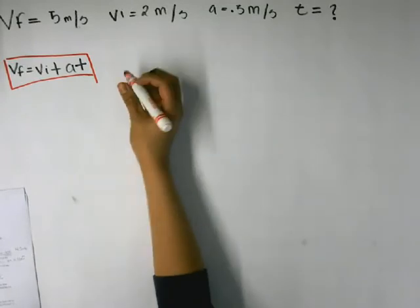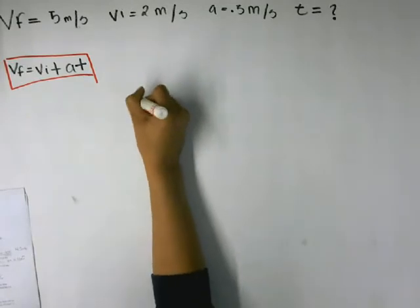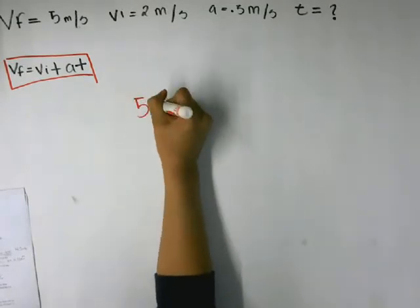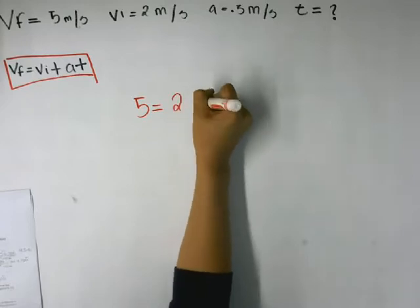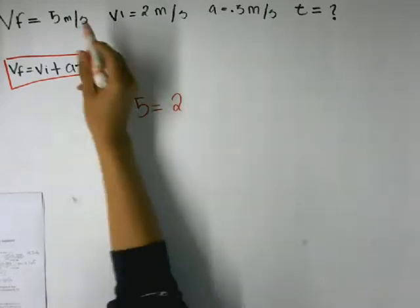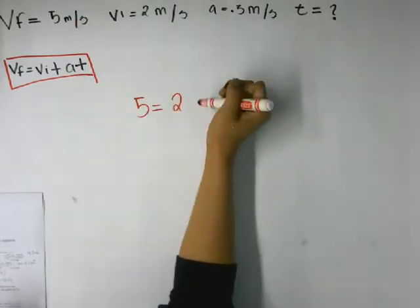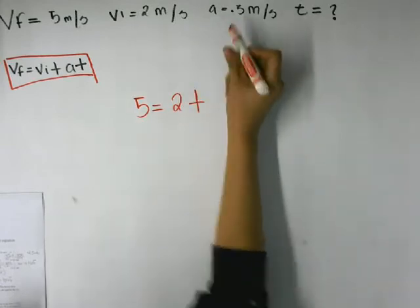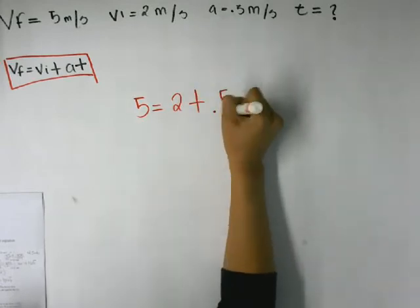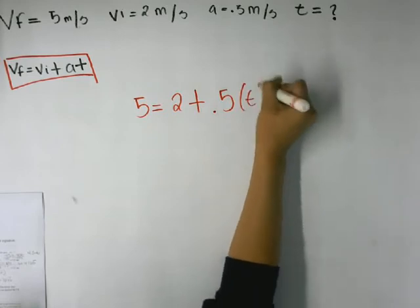To solve for T, first we have to plug in what we know. So VF equals 5, Vi equals 2 plus A which equals 0.5 times T, but we don't know what T is. So then we just solve for T.